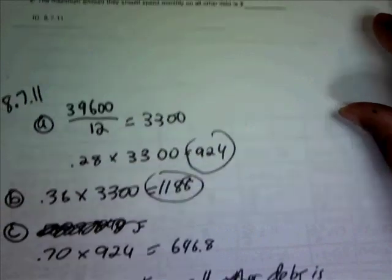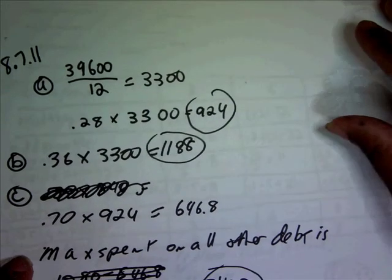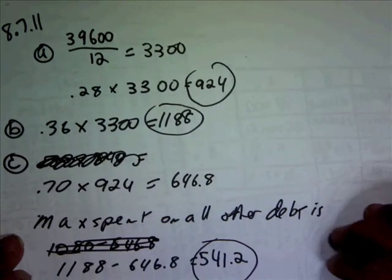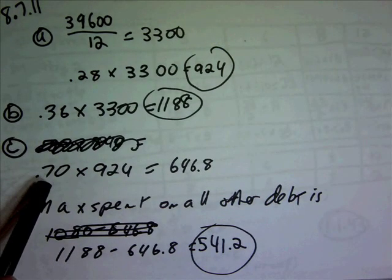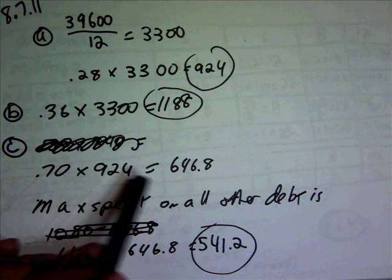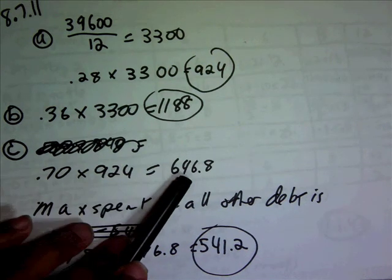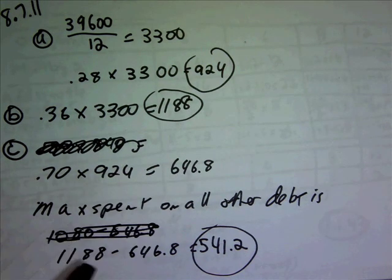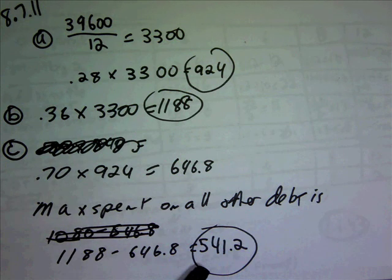Let y'all see that there. So 70% of $924, so the maximum all other debt is $541.